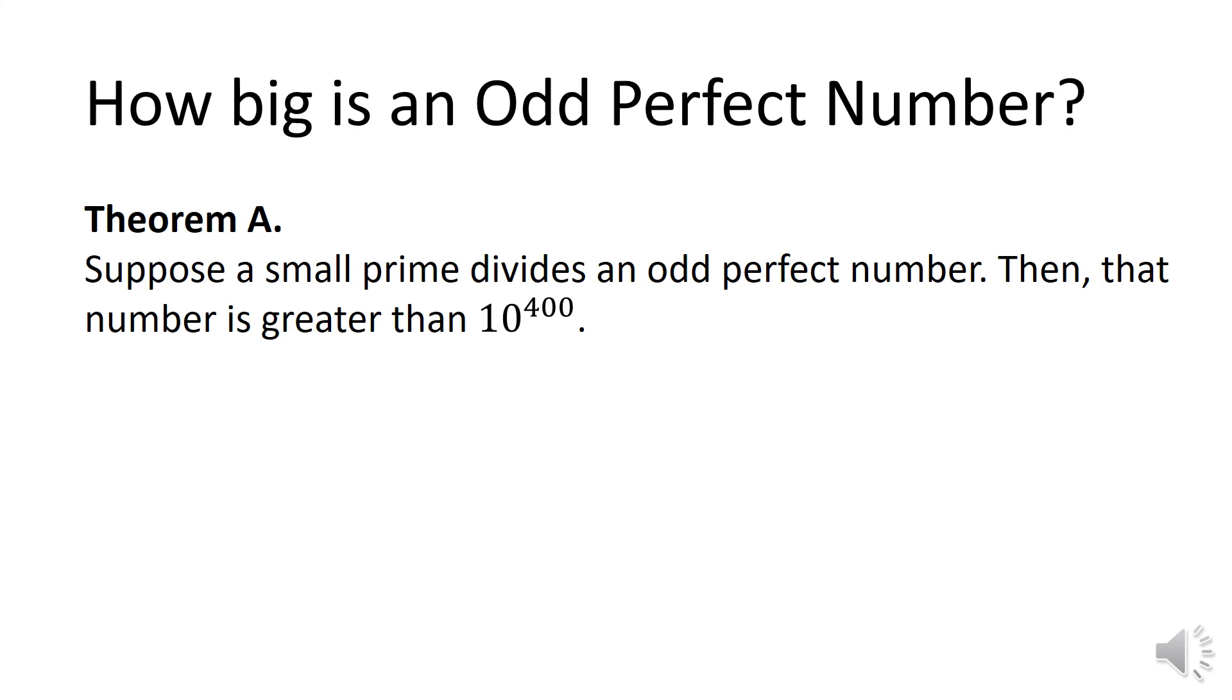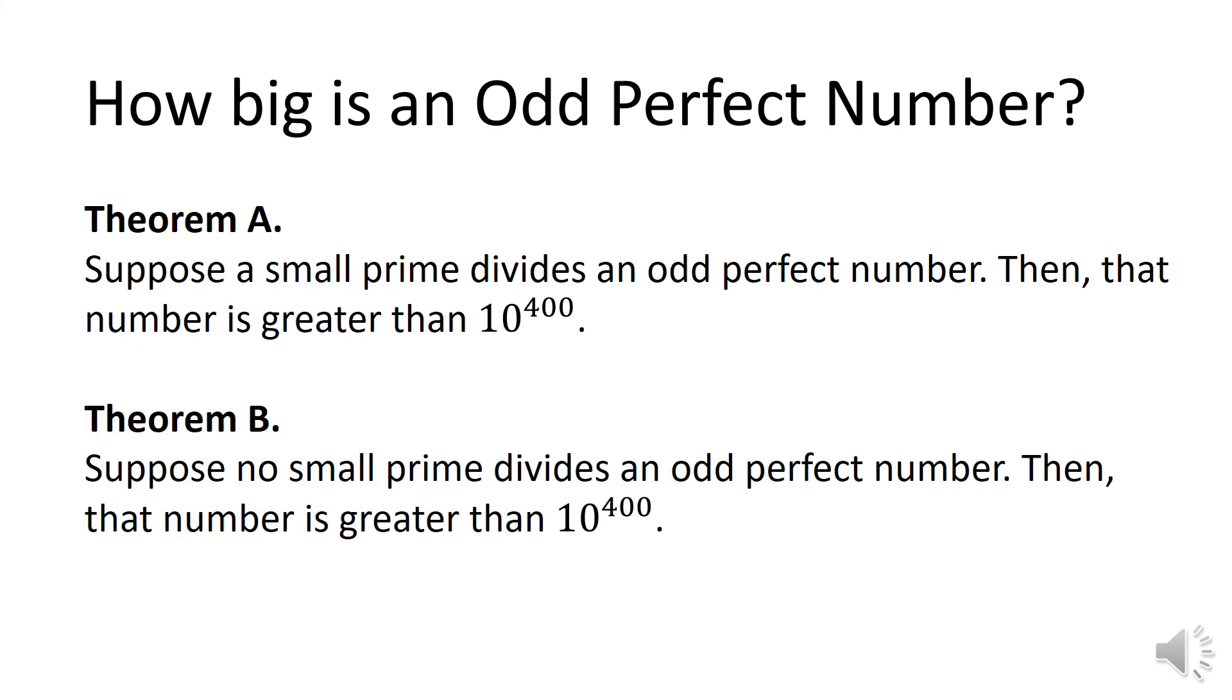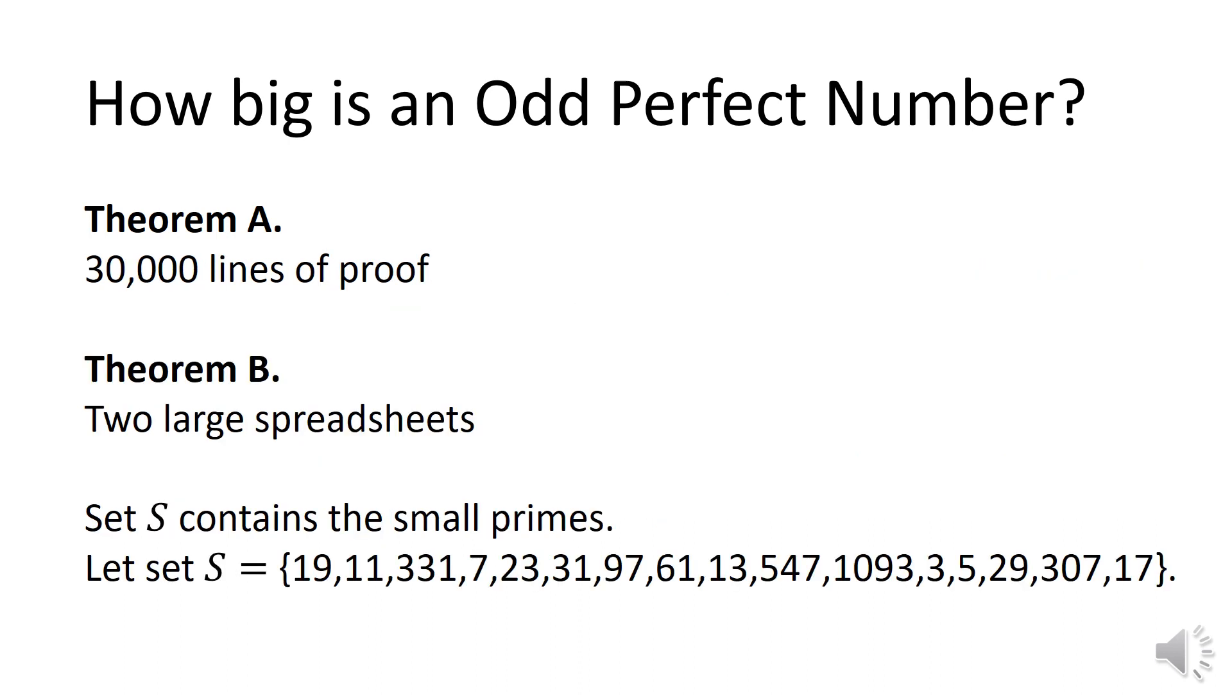The proof of the main theorem is in two parts: Theorem A and Theorem B. Theorem A: suppose a small prime divides an odd perfect number, then that number is greater than 10 to the 400. Theorem B: suppose no small prime divides an odd perfect number, then that number is greater than 10 to the 400. The proof of Theorem A is huge and has 30,000 lines of proof. Theorem B is filled with math technology and is proved with two spreadsheets. The small primes are contained in set S.